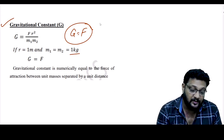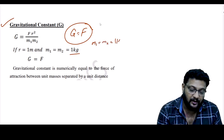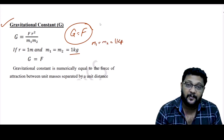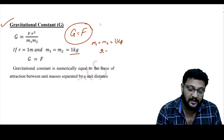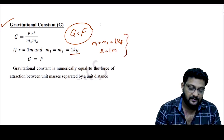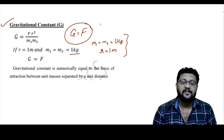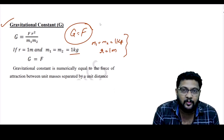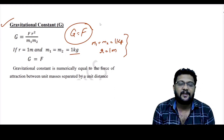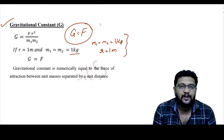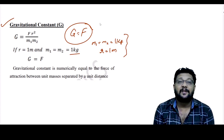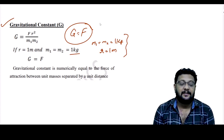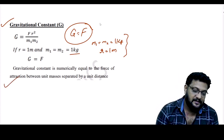If M1 = M2 = 1 kilogram and r = 1 meter (unit distance), then G is numerically equal to the force of attraction between two unit masses separated by unit distance. This is the gravitational constant.